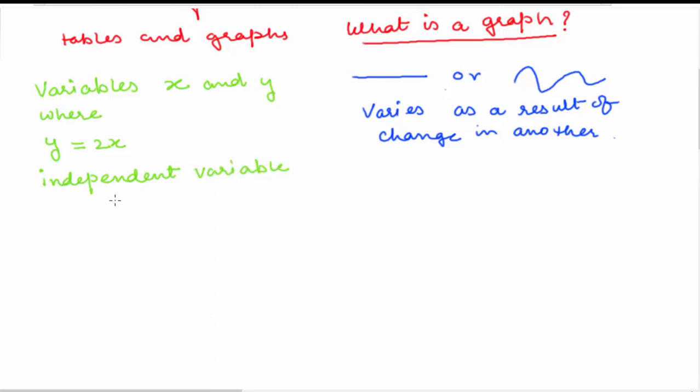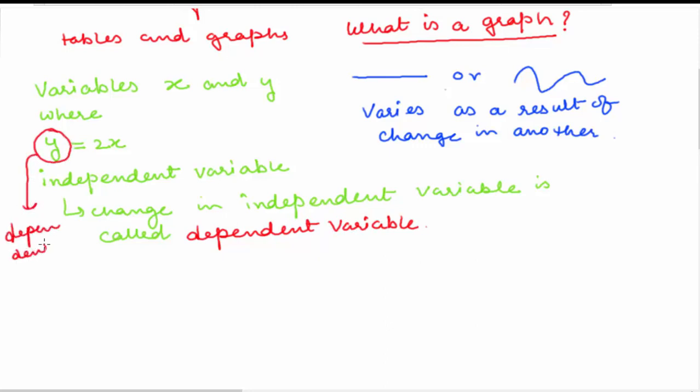And another variable which varies as a result of change in independent variable is called dependent variable. Now here this y is dependent variable and this x is independent variable, and the values of y changes with change in values of x.